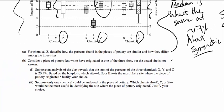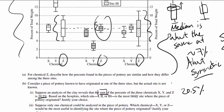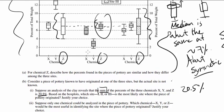Now let's look at part B. Consider a piece of pottery known to have originated at one of the three sites, but the actual site is not known. Suppose the analysis of the clay reveals that the sum of the percent of the three chemicals X, Y, and Z is 20.5 percent. Based on the box plots, which site do we think is most likely this piece of pottery is from?